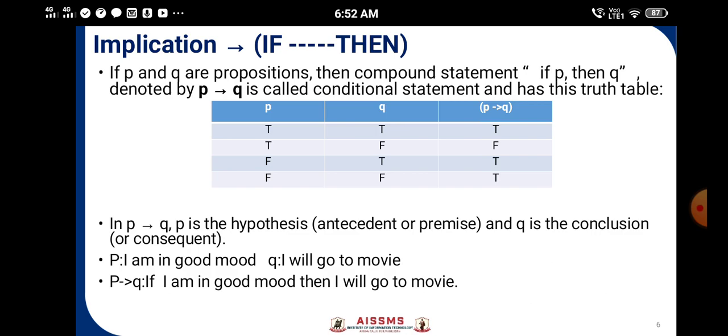In p → q, or if p then q, p is the hypothesis (antecedent or premise) and q is the conclusion (or consequent). Consider the statement p: 'I am in good mood,' q: 'I will go to movie.' If p then q gives: 'if I am in good mood, then I will go to movie.'